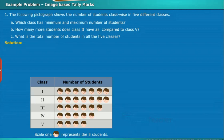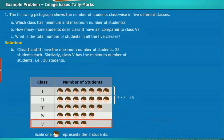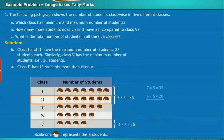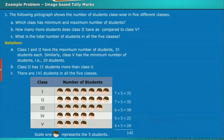The solution is as follows. Class 1 and class 2 have the maximum number of students, 35 students each. Similarly, class 5 has the minimum number of students, that is 20 students. Class 2 has 15 students more than class 5. There are 145 students in all 5 classes.